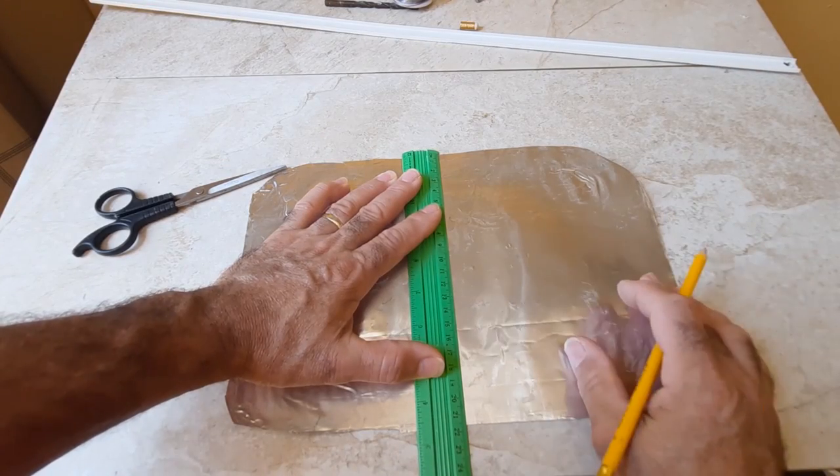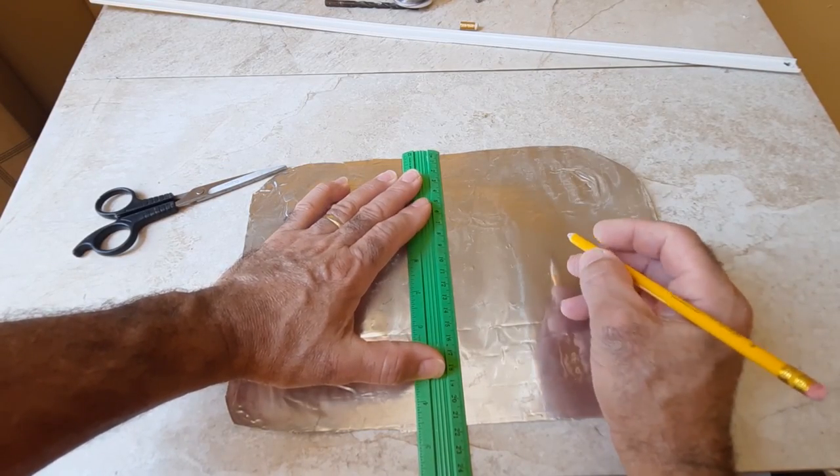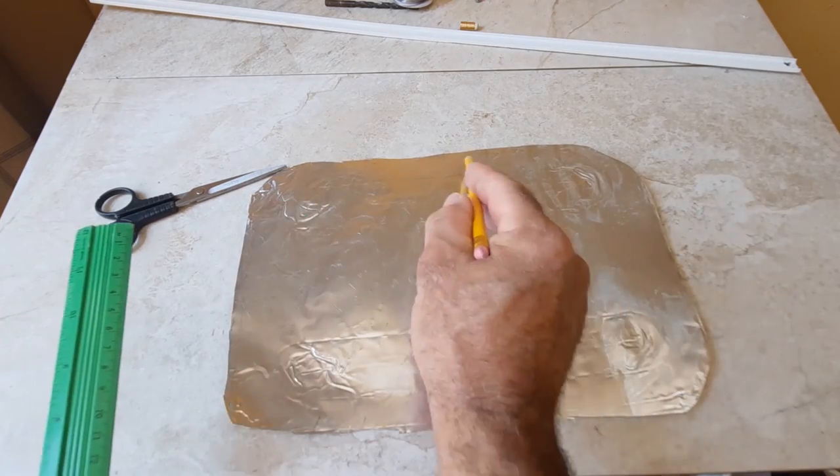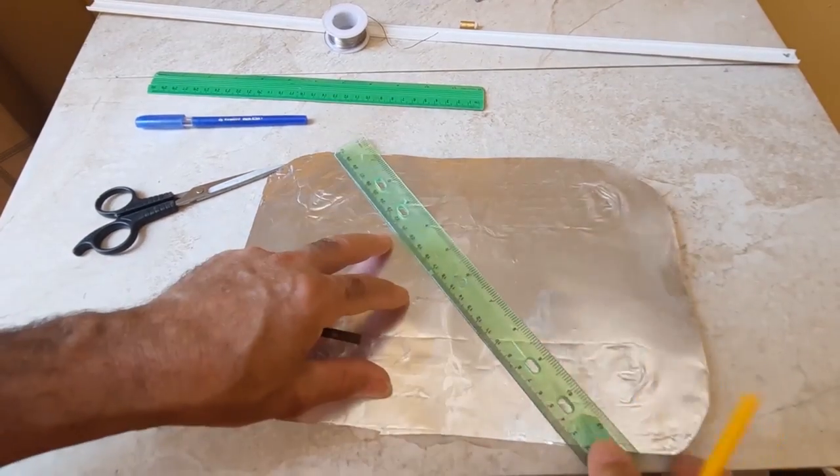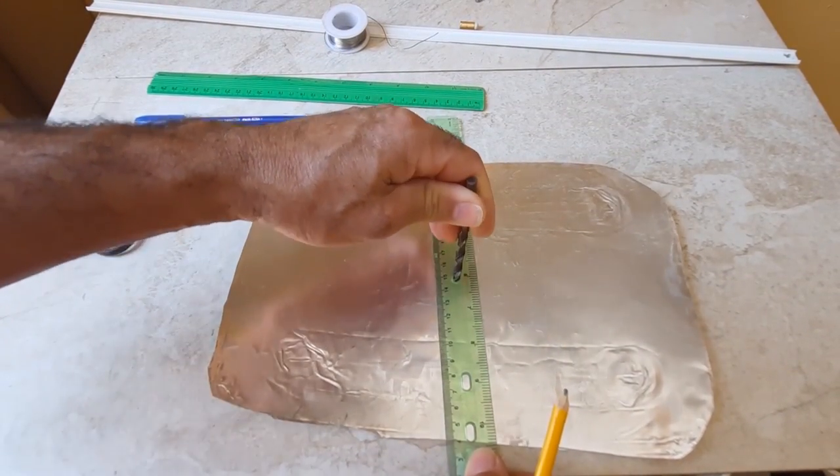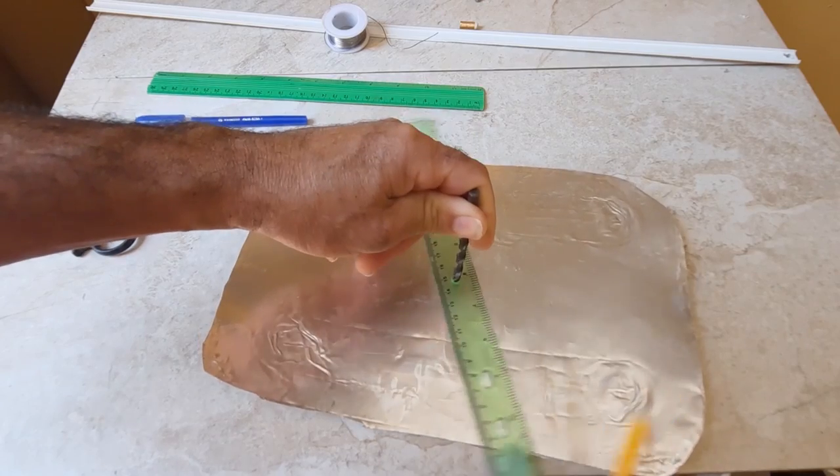Second step is to find the center of the sheet. Third step, we will use a ruler to find the center. From the center I will make a circumference. Fourth step, take a ruler like this that has these holes and trace until you get the circle.